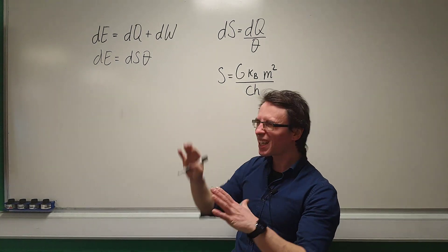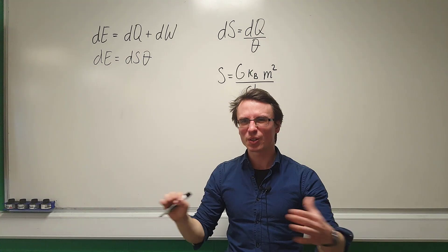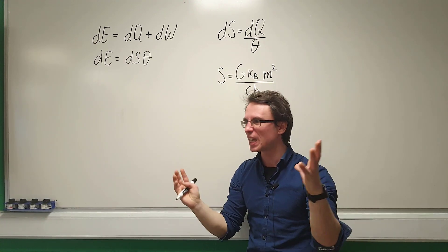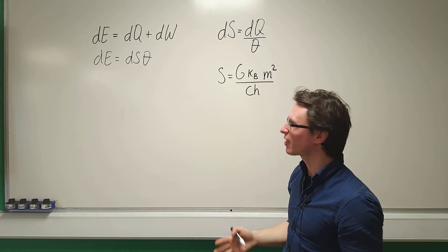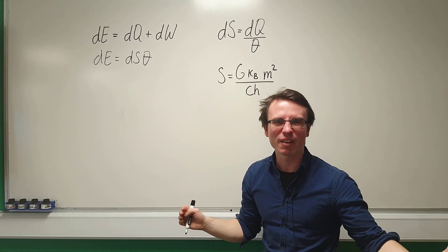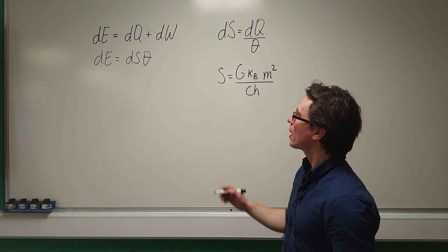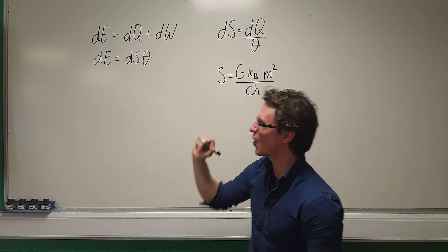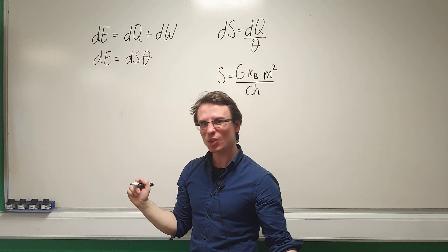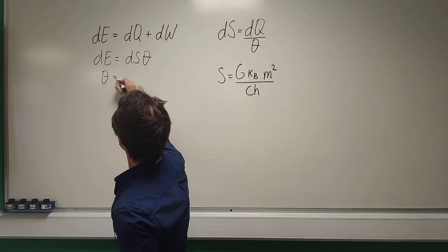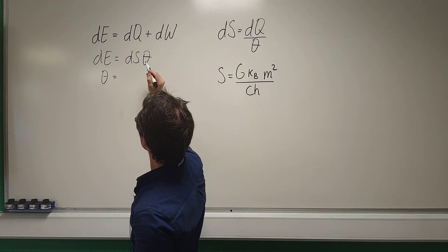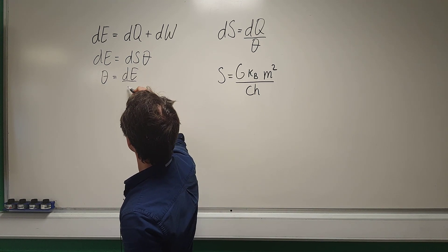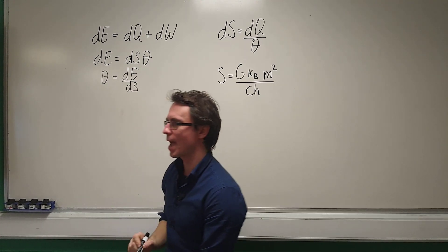Let's assume that DW = 0 — there's no work done in this case for an isolated black hole in the middle of space, which is a very valid assumption. So DE = DS·θ, and rearranging for θ, we get θ = DE/DS.